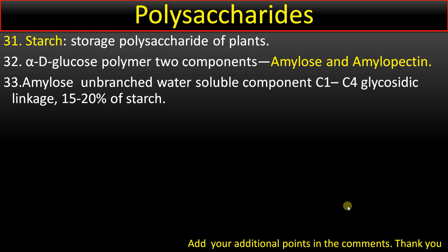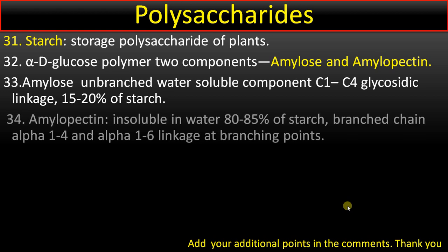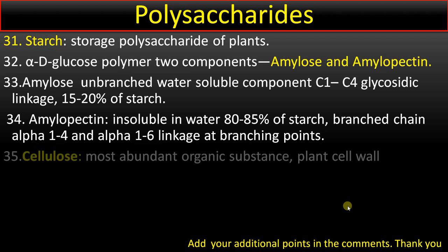Amylopectin is insoluble in water and makes up 80 to 85 percent of starch. It is branched, with α-1,4 linkages in linear chains and α-1,6 linkages at branching points. So in amylose there is only α-1,4 linkage, whereas amylopectin has α-1,4 linkage in linear chains and α-1,6 linkage at branch points.